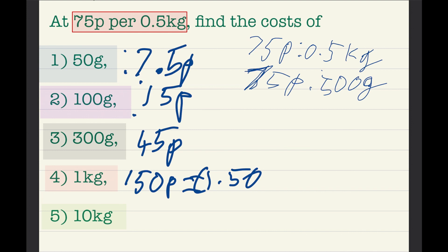For 10kg, it's just 1kg times 10. So 150p times 10 equals £15 or 1,500p.